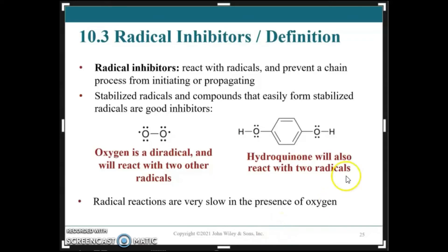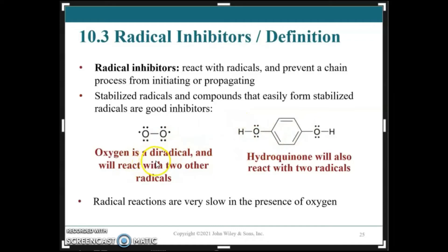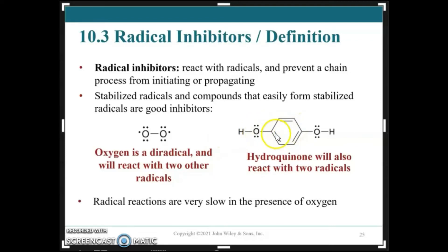For terminating or inhibiting radical reactions, there are compounds that act as radical inhibitors. They react with radicals and prevent the chain process from propagating or initiating. These molecules can stabilize radicals and rearrange to eliminate the radical. Oxygen is a diradical capable of reacting with two other radicals, so for every mole of diatomic oxygen, you can consume two moles of radicals. Hydroquinone is another radical inhibitor.